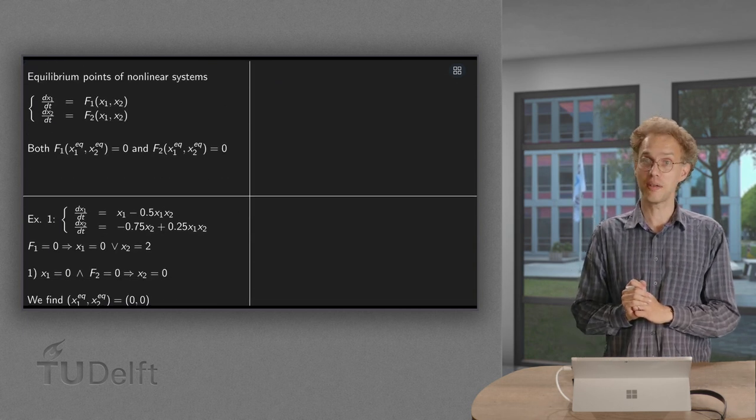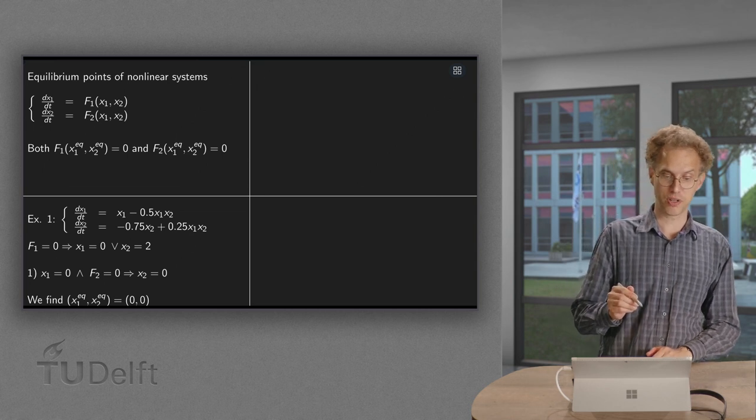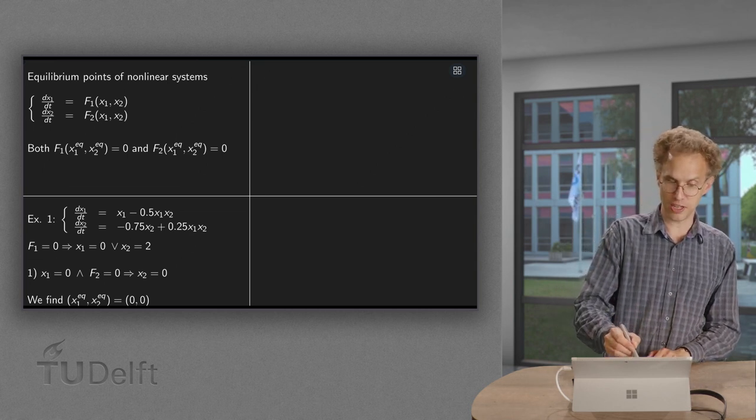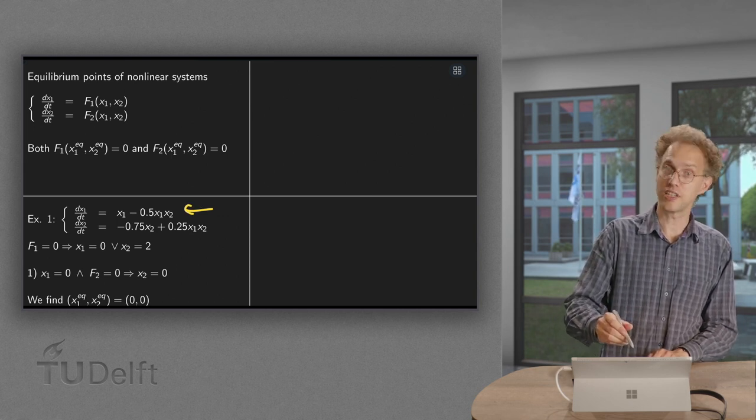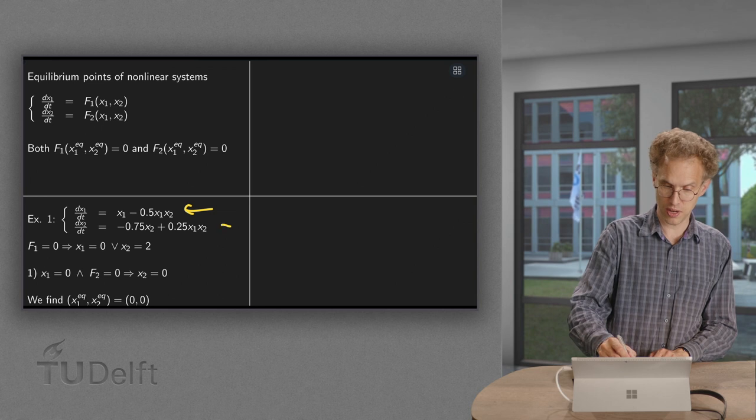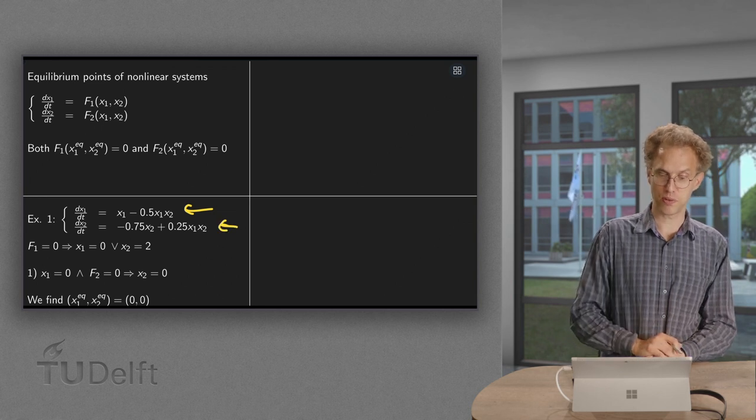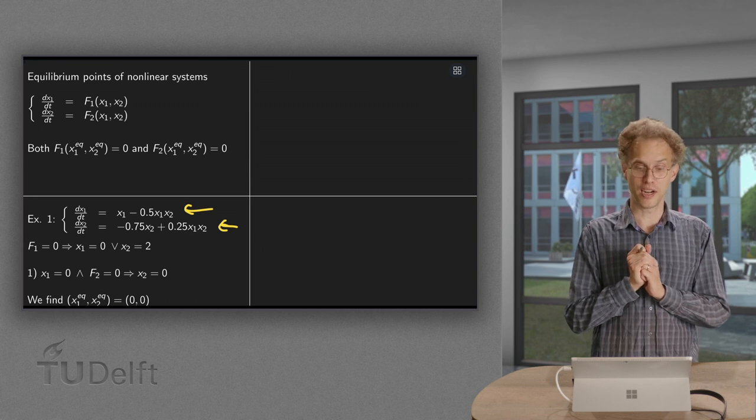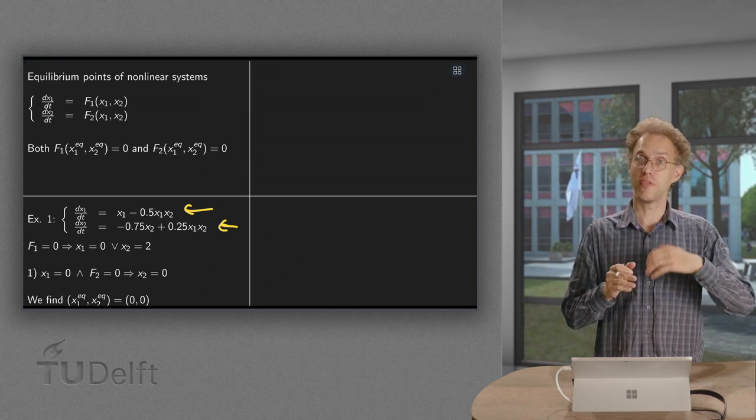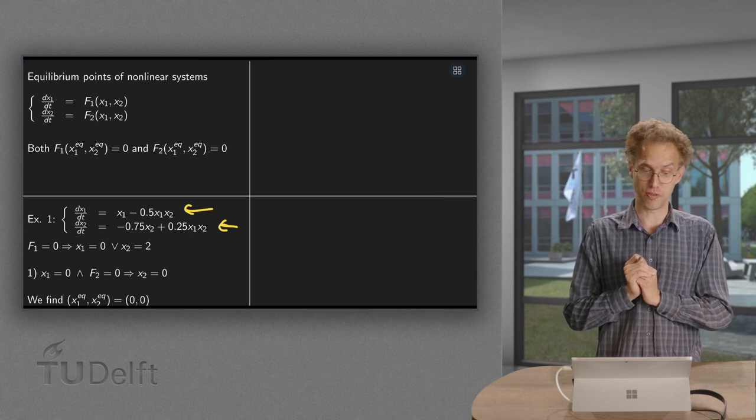So how can we find them? Well, let's do two examples. First example: dx1/dt equals x1 minus 1/2 x1 times x2, and dx2/dt equals minus 0.75x2 plus 0.25x1 times x2. So this may remind you of the system with the zebras and the lions we saw before.